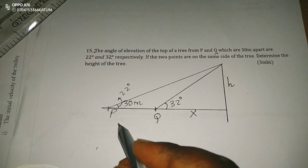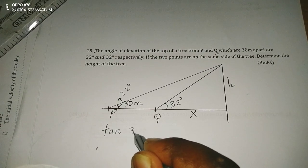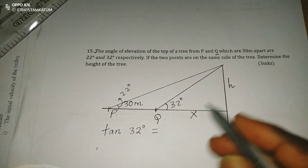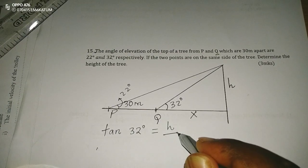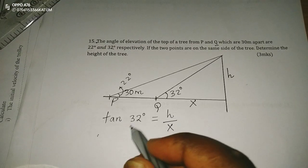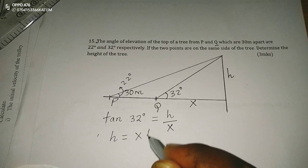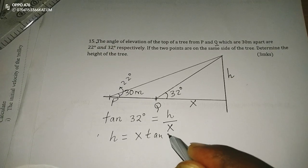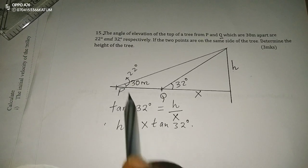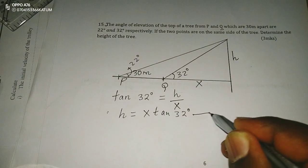Therefore, we can say the tangent of 32 degrees is equivalent to the opposite length, which is H, divided by the adjacent length, which is X. This means that H equals X times tan(32 degrees). Let me call this equation 1.